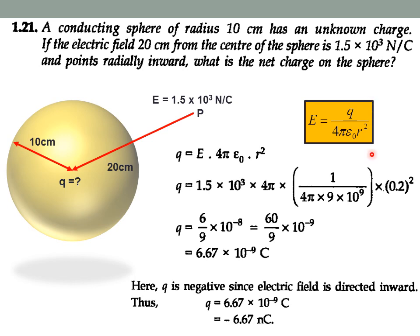We know the equation for electric field produced by a point charge Q: E = Q / (4πε₀R²). All these values are known from the problem, so we can calculate Q. Using 1/(4πε₀) = 9 × 10⁹, the 4π terms cancel and we calculate the charge as 6.67 × 10⁻⁹ coulombs. However, since the electric field is directed inward, the answer must be written as Q = −6.67 nC.